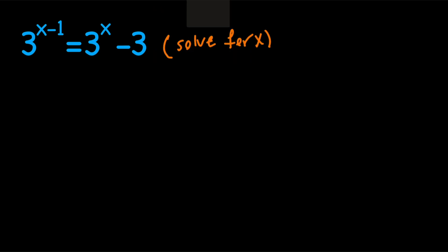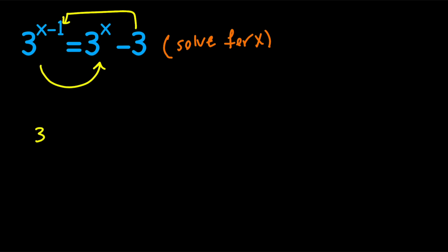To do that, first of all, we need to move this to the left-hand side and move this to the right-hand side. So we're going to have 3 equals 3 to the power of x minus 3 to the power of x minus 1.